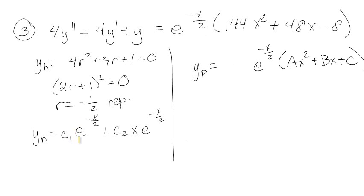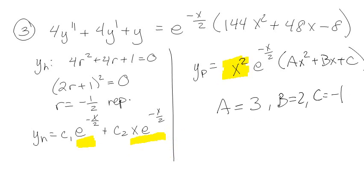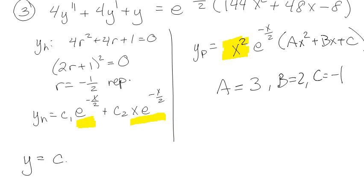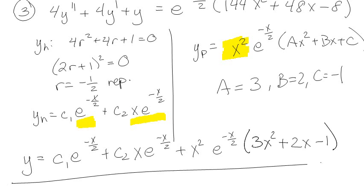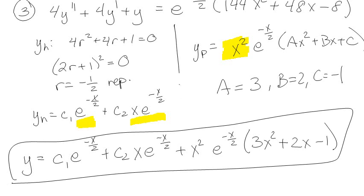But since I already have e^(-x/2) and xe^(-x/2) in the homogeneous, I have to multiply by x squared, giving a guess of x²e^(-x/2)(ax² + bx + c). If you go through all of this and solve it, you'll eventually get a equals 3, b equals 2, and c equals negative 1, making your full solution c₁e^(-x/2) plus c₂xe^(-x/2) plus x²e^(-x/2)(3x² + 2x minus 1).